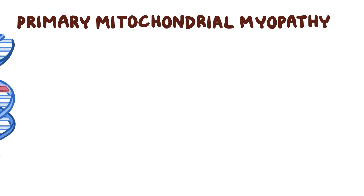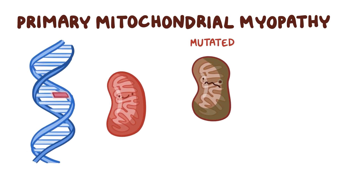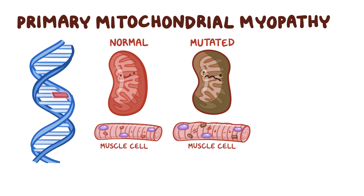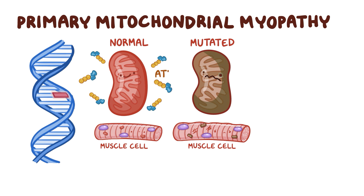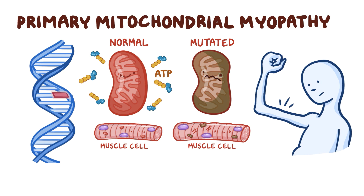Primary mitochondrial myopathy is a rare genetic disorder that occurs when there are mutated mitochondria in muscle cells, especially skeletal muscle cells. These mitochondria are unable to generate adenosine triphosphate, or ATP, which is a form of energy used by our cells. As a result, muscle cells, which require a lot of energy to function, stop functioning properly.